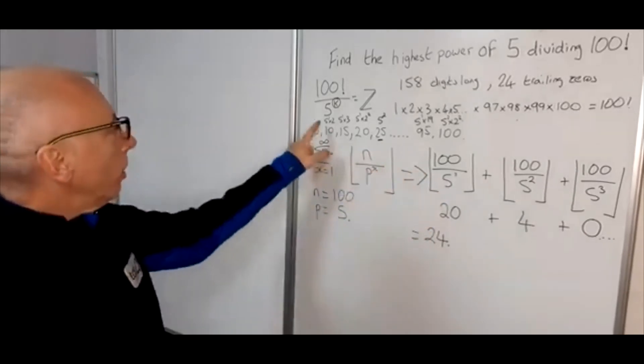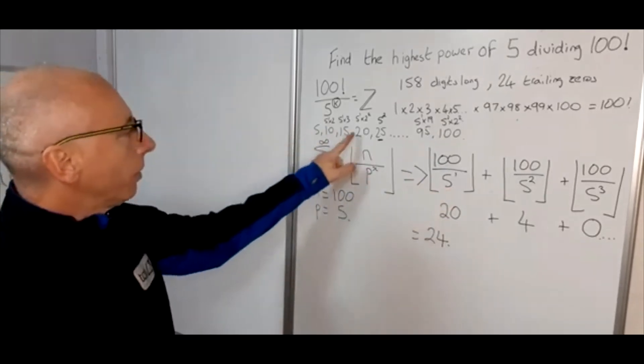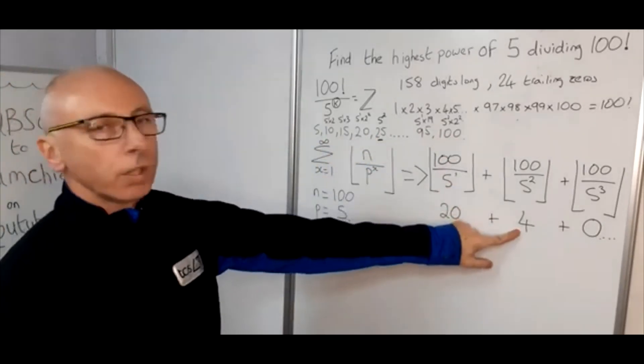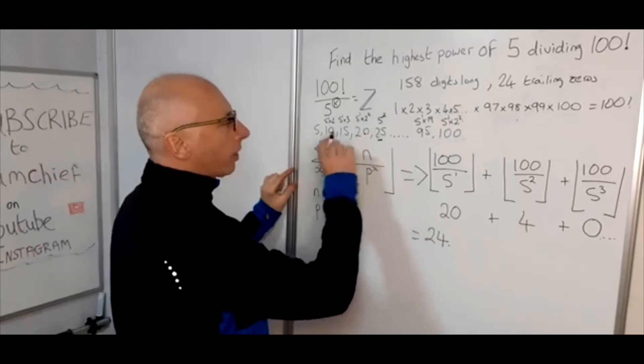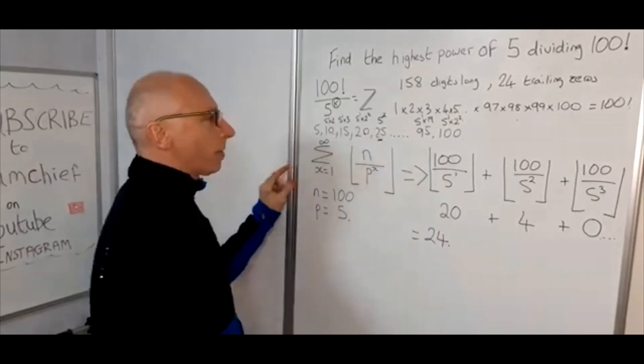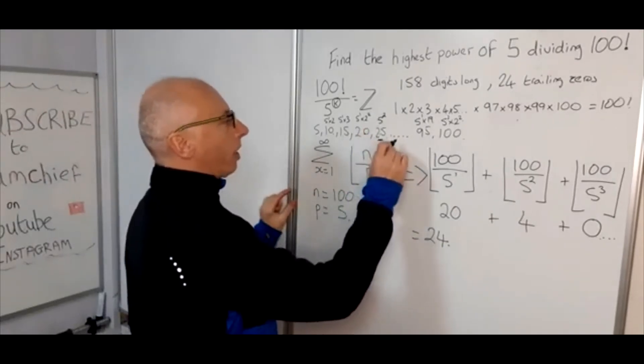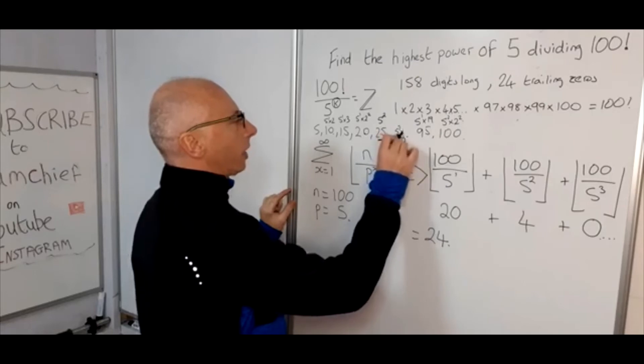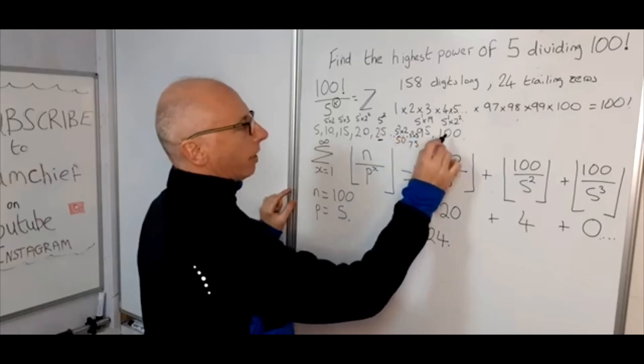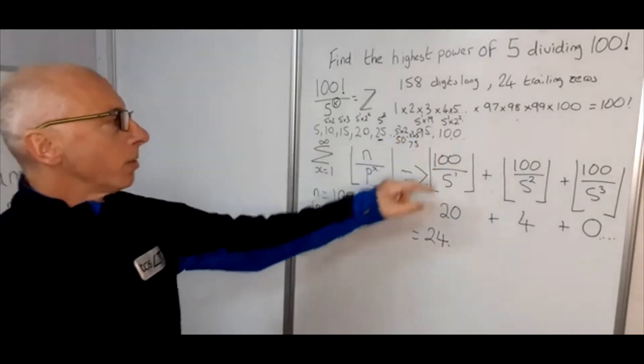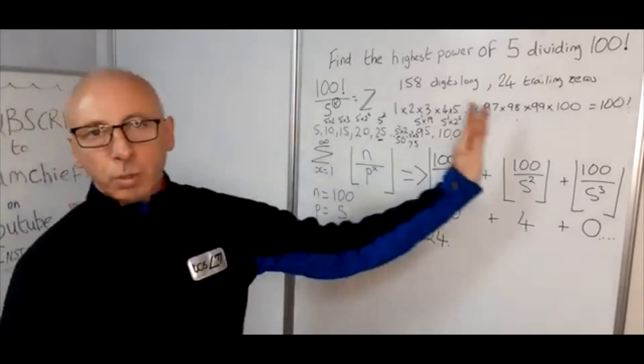So if you work out along the line here all the way to 100, 5 to the power of 1, there will be 20 of those along the line, including 4 which are square numbers. So 5, 10, 15, 20, 25 going along the line, that will be 20 digits, of which 4 will be square numbers. So we'll have 5 squared which is 25, we'll have 50 which is 5 squared times 2, there will be a 75 which is 5 squared times 3, and of course here we've got the 100 which is 5 squared times 2 squared. So that shows us where the 4 comes from, and the 20 will be all the multiples of 5 along there.